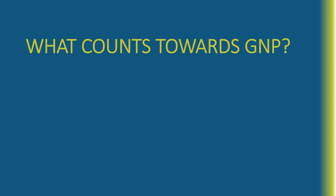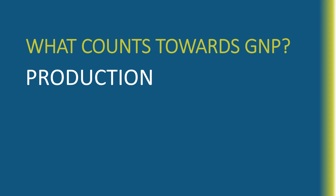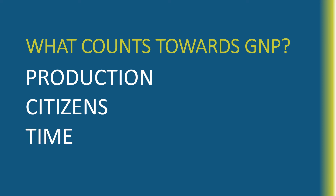What counts towards GNP is very similar — we look at production only; not transfers. But now the difference is we don't look at geography. What we're looking at in GNP is the production by citizens of the country under consideration. Any production by citizens of a country counts towards that country's GNP, regardless of where they're doing this production. Only those goods produced during the current period are counted towards GNP.